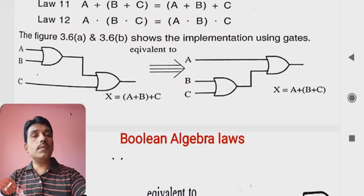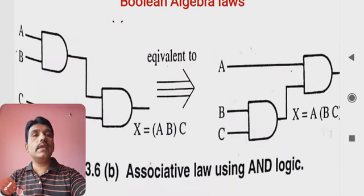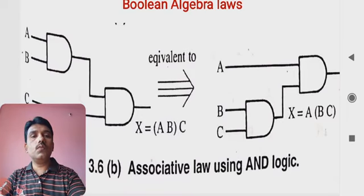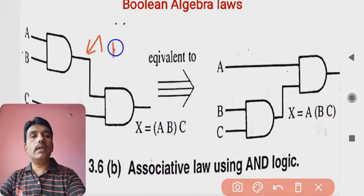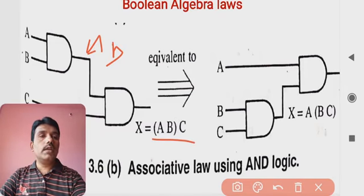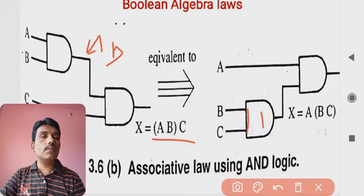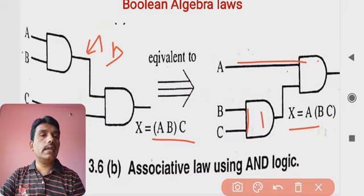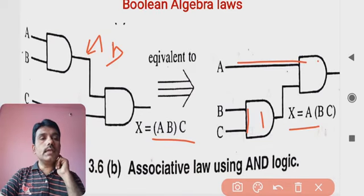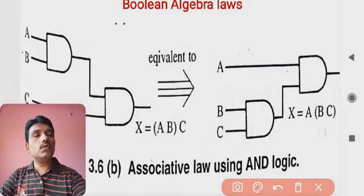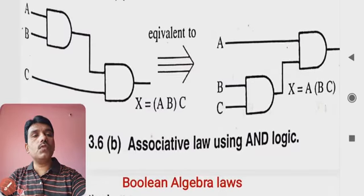For the AND operation circuit: two AND gates are used. A AND B gives the output for the first gate, then AND with C gives A AND B AND C. For the other arrangement: B and C are inputs to one AND gate giving B AND C, then A comes to the second AND gate giving A AND B AND C as output. This logic circuit implements the associative law.